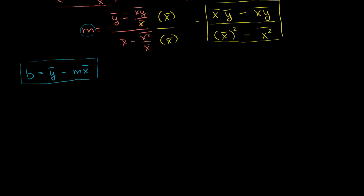In the last several videos, we did some fairly hairy mathematics, and you might have even skipped them. But we got to a pretty neat result. We got to a formula for the slope and y-intercept of the best fitting regression line when you measure the error by the squared distance to that line. I'll just rewrite it here so we have something neat to look at.